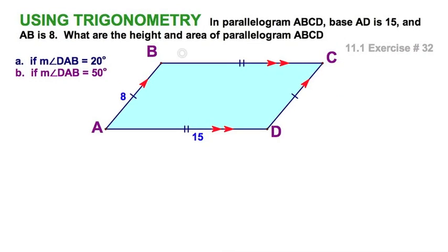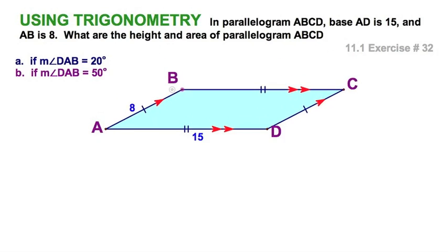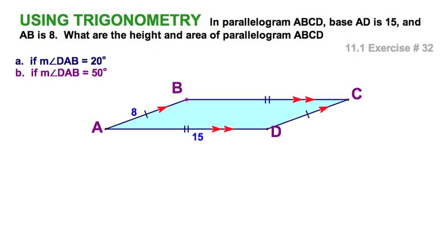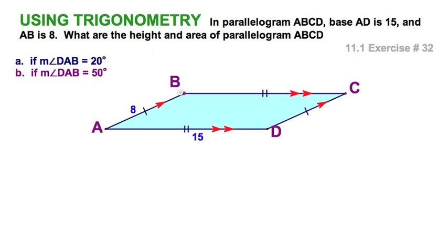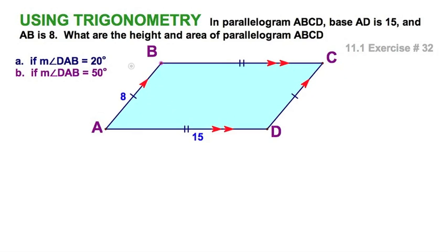Now we're going to calculate the area of this figure. This figure is a parallelogram with given sides - a pair of 15s and opposite sides of 8. I could use either for bases, but I'm going to use 15 for a base because I'm going to find the area when the angle at A is 20 degrees and when it is 50 degrees. Clearly the height is changing.